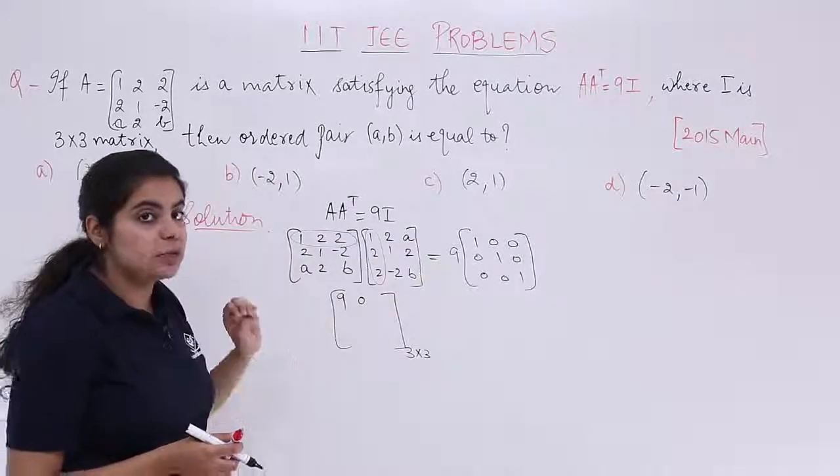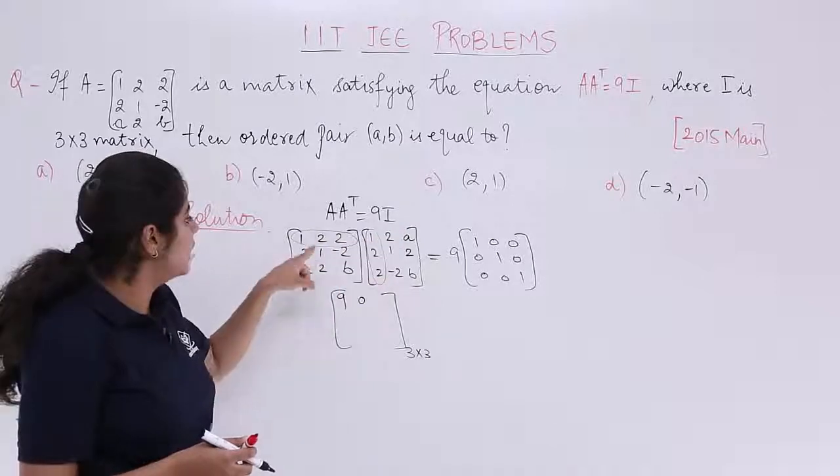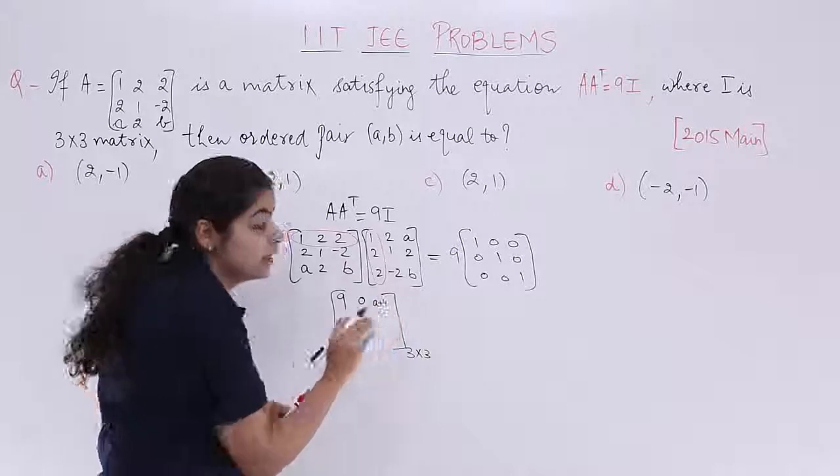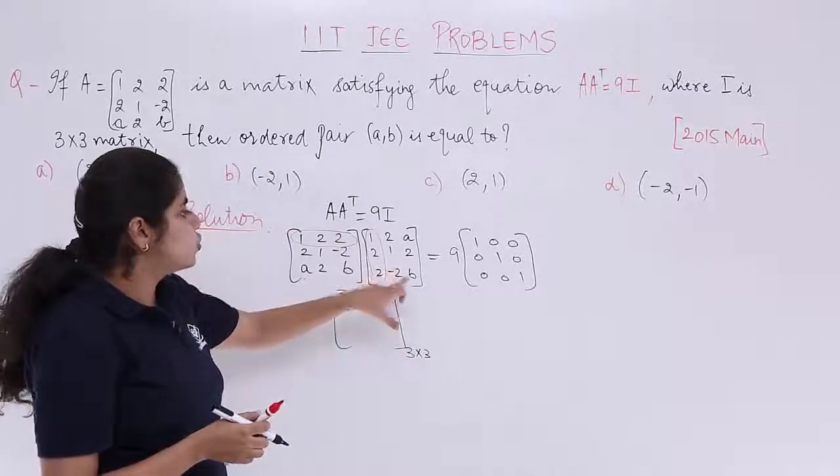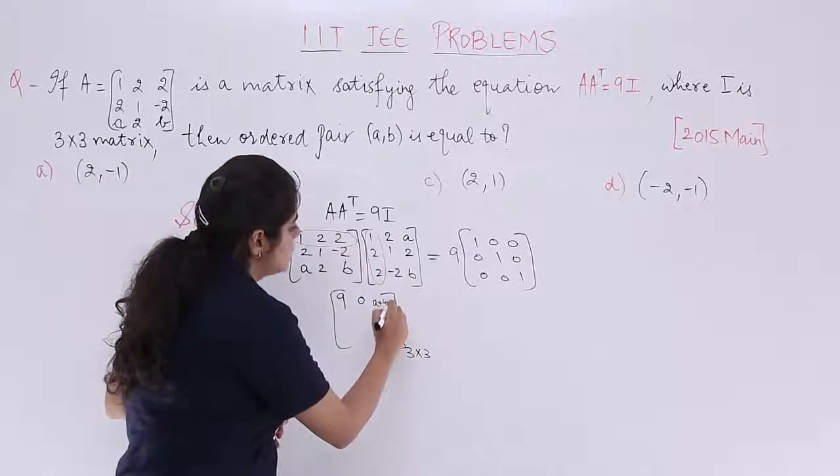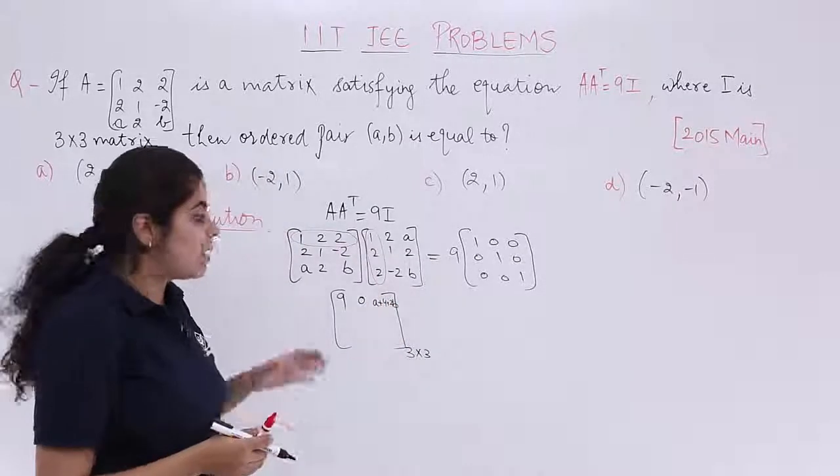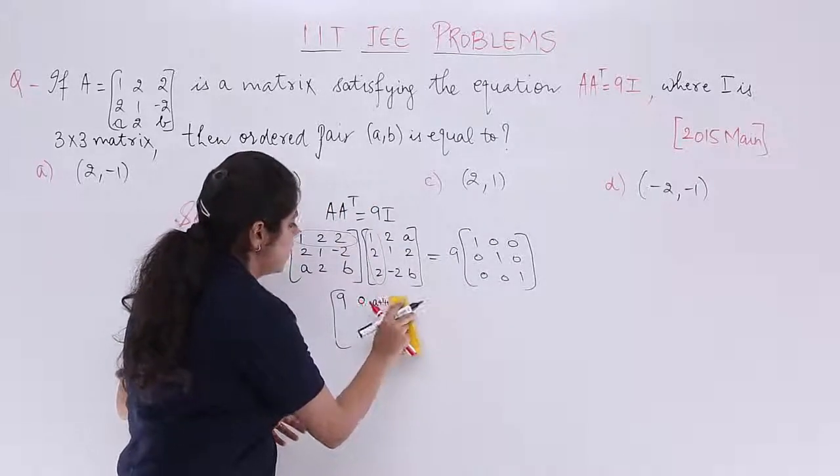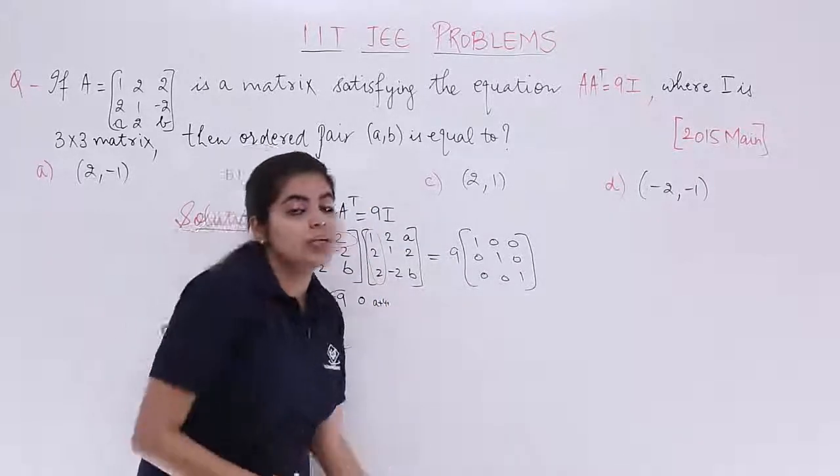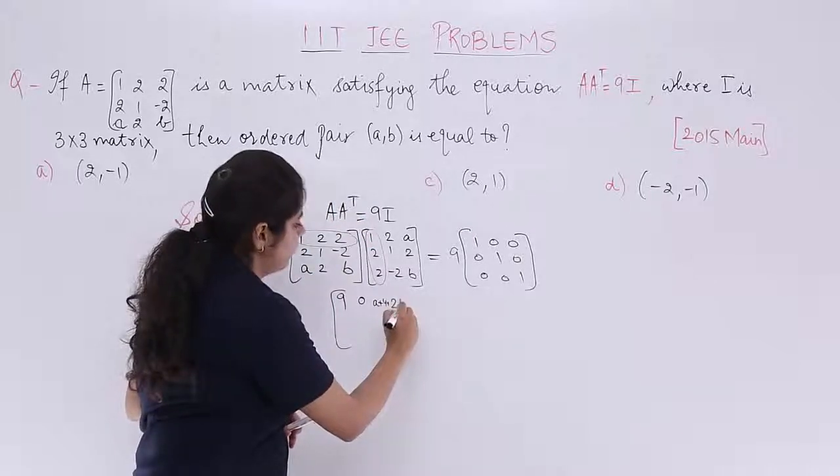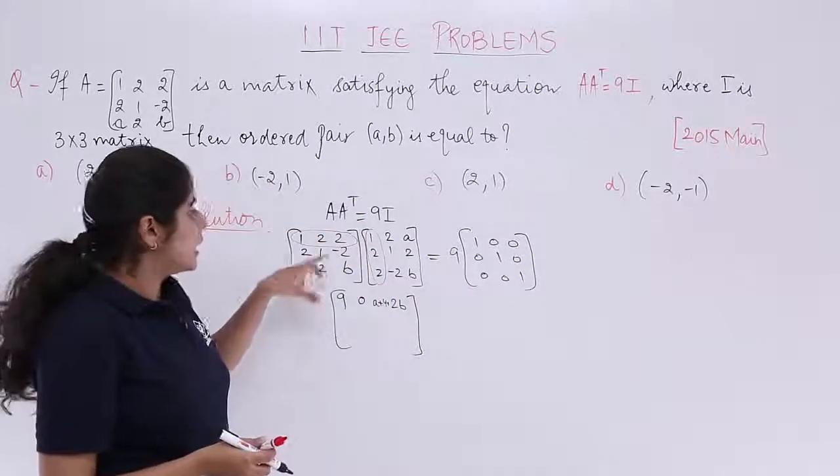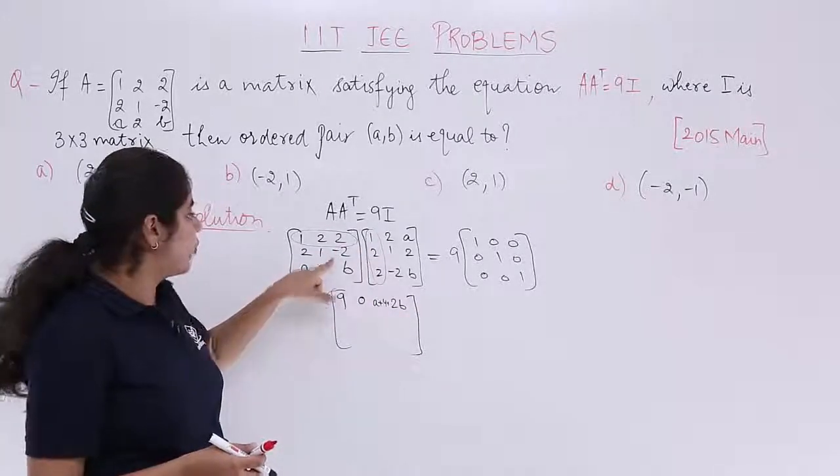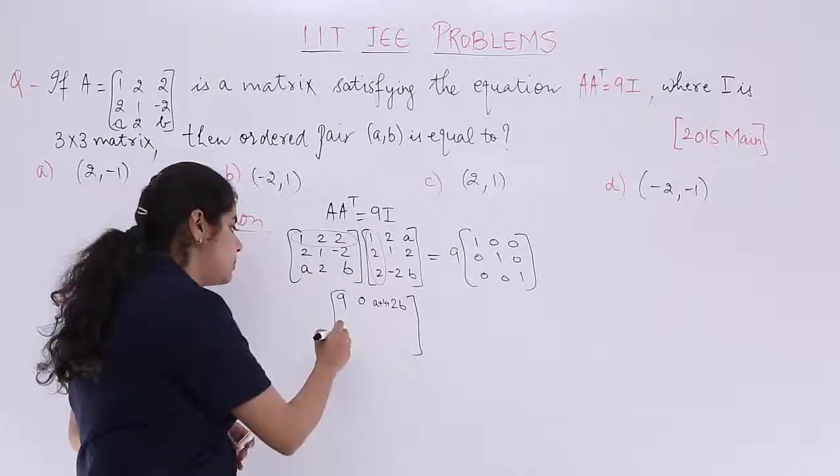So first row, third column means 1 times A is A, 2 into 2 is 4. So it has become A plus 4 till now and 2 into B is 2B. So it is plus 2B. It has come out of the matrix symbol. Let's erase it and make space to write things in a better manner. Next, second row, first column. So it is 2 times 1 is 2, 1 times 2 is 2, 2 plus 2 is 4, and minus 2 and 2. So it becomes basically 0.